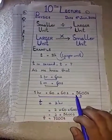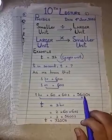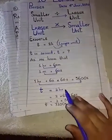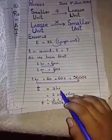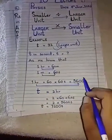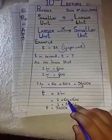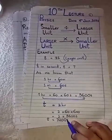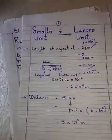So 1 hour equals 3600 seconds. Now, if the time duration is 2 hours and we want to convert it to seconds, we multiply: 2 × 60 × 60 = 7200 seconds.